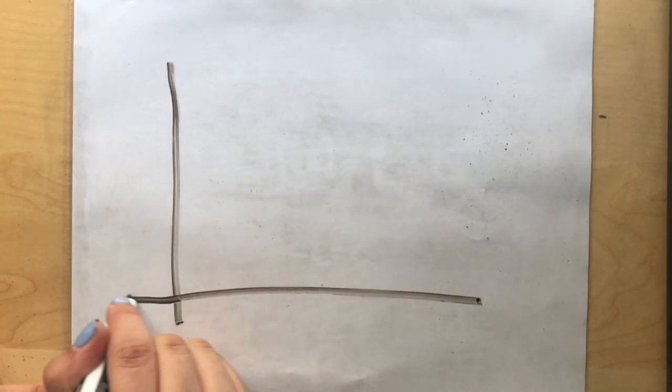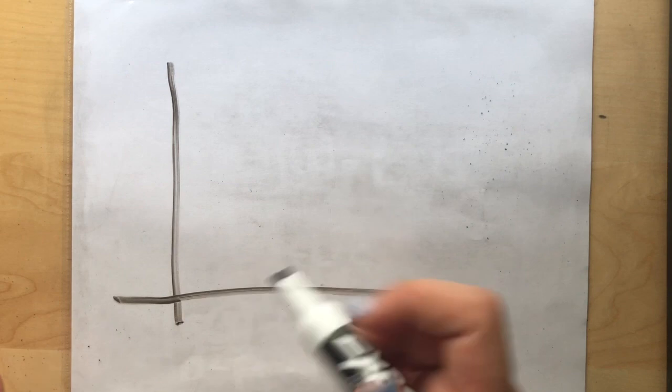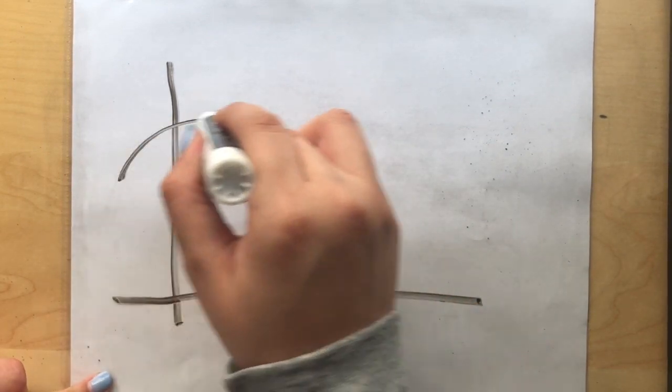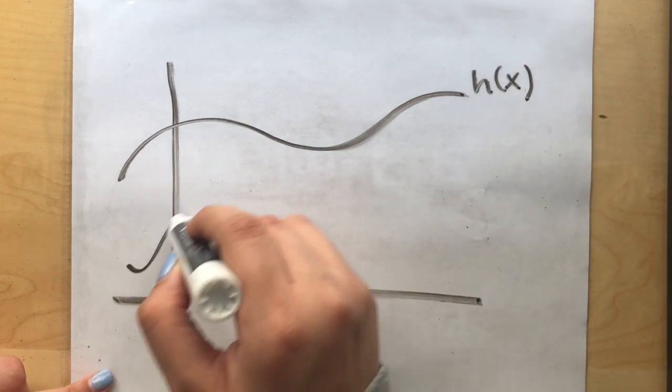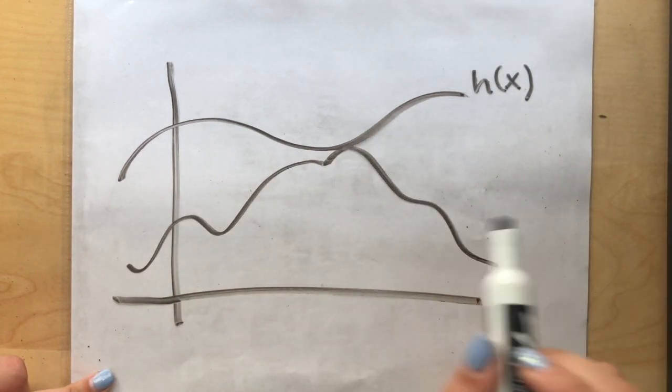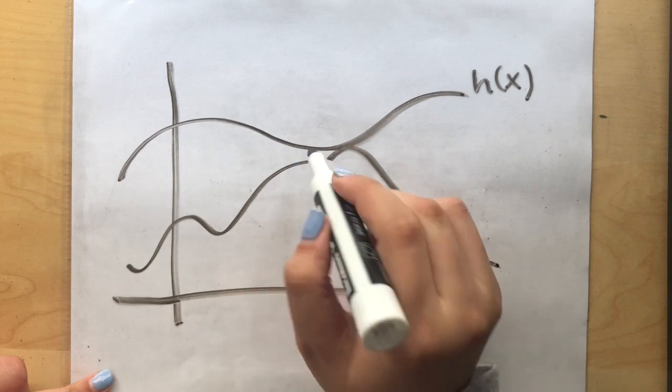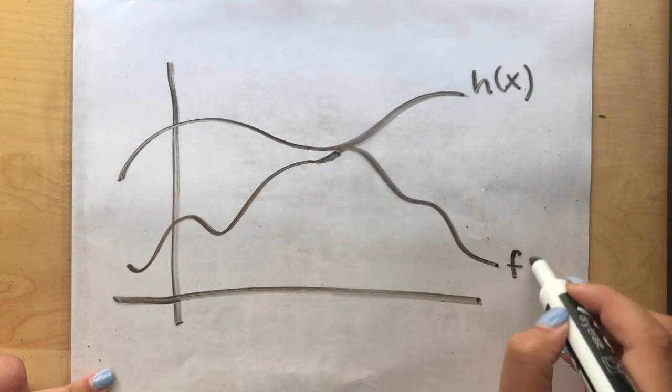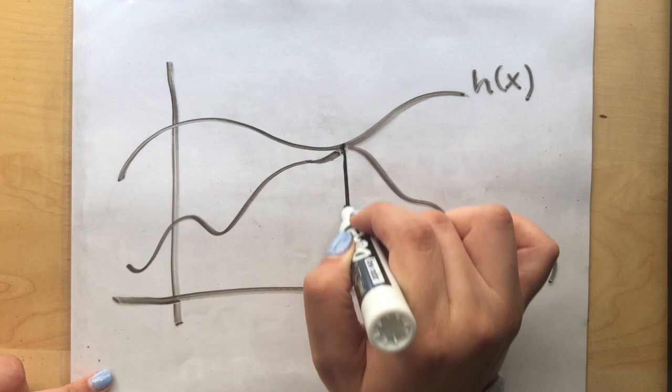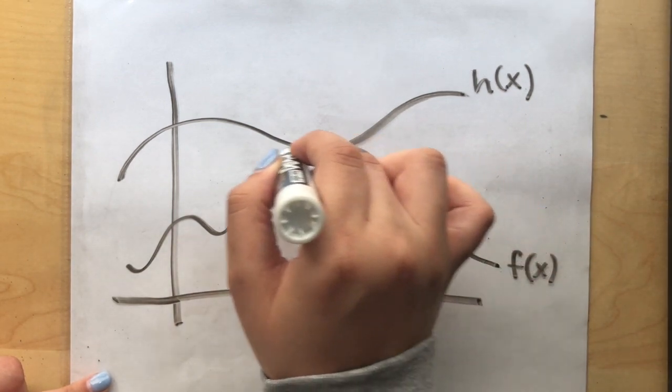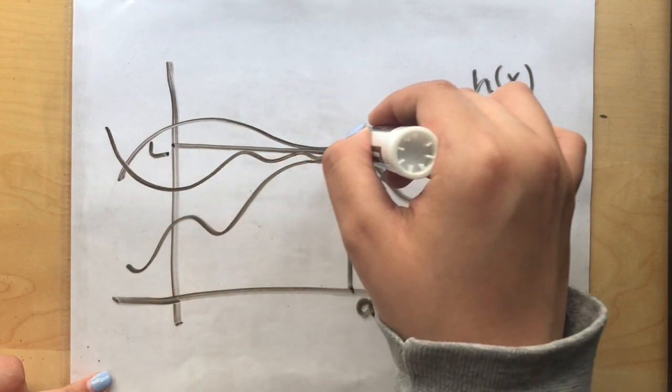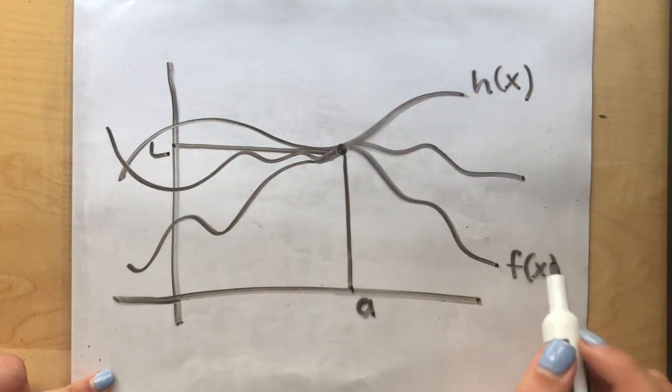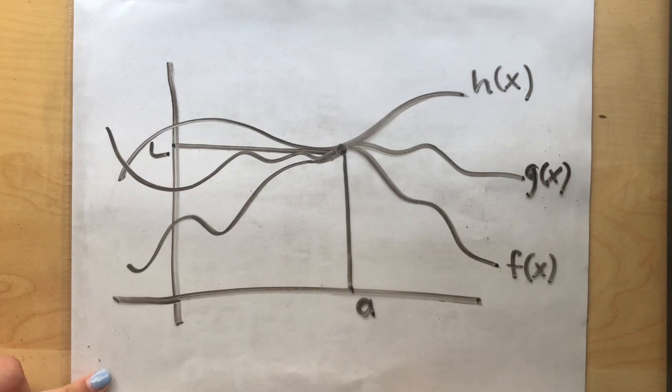Here is the theorem put into a visual format. There is one function called h of x and a second function called f of x that both have a particular point which have the same limit. By the squeeze theorem, there is a third function called g of x that also has the same point that has the same limit in between the h of x and f of x functions.